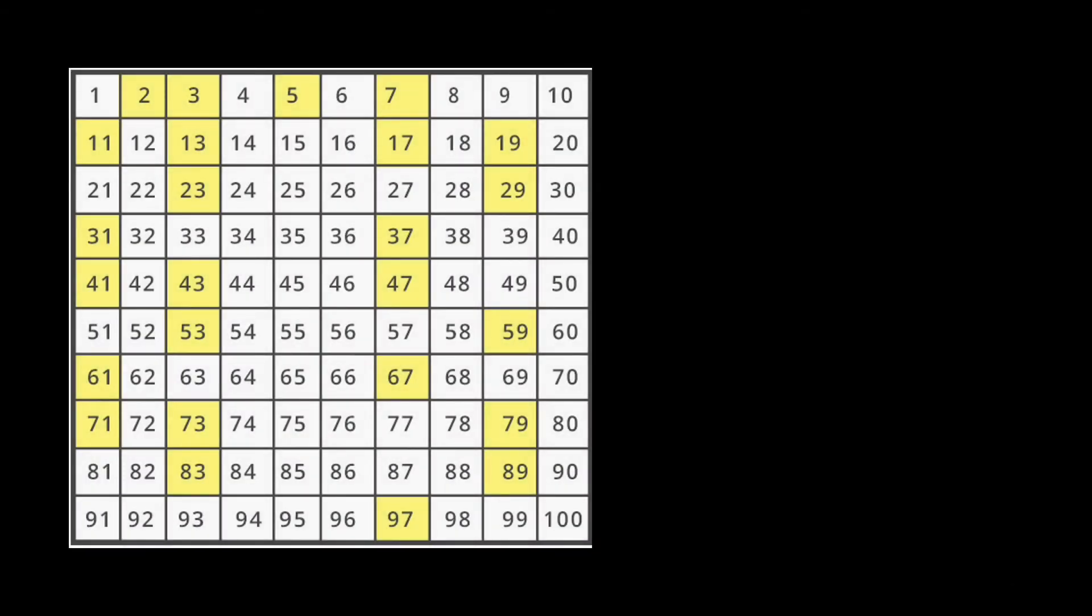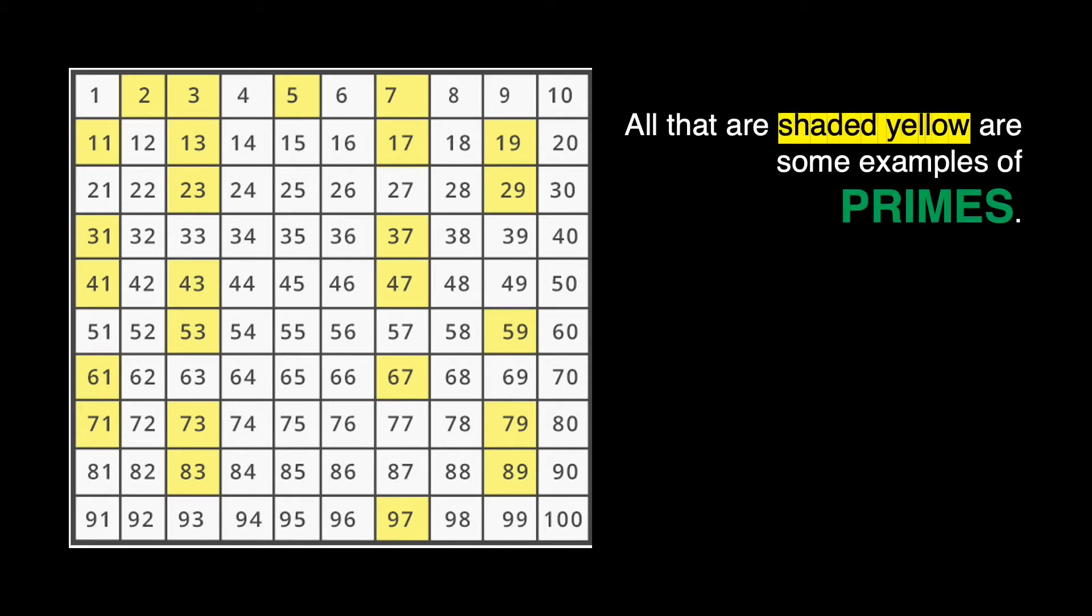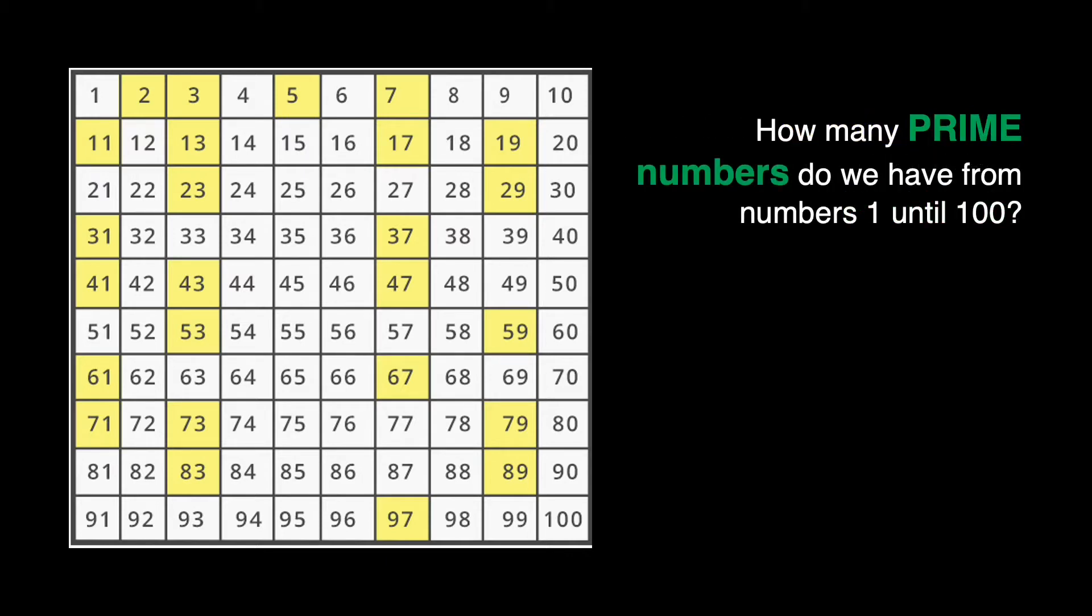Let's take a look at this table. All that are shaded yellow are some examples of prime numbers. We have here 2, 3, 5, 7, and so on and so forth. The question now is, how many prime numbers do we have from 1 until 100?